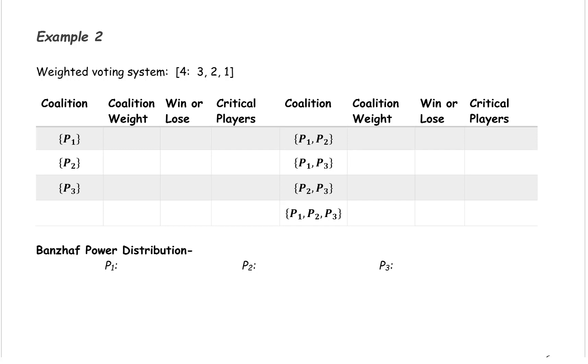Example 2: we want to compute the Banzhaf power distribution for the weighted voting system with a quota of 4, and the weights of the players are 3, 2, and 1.